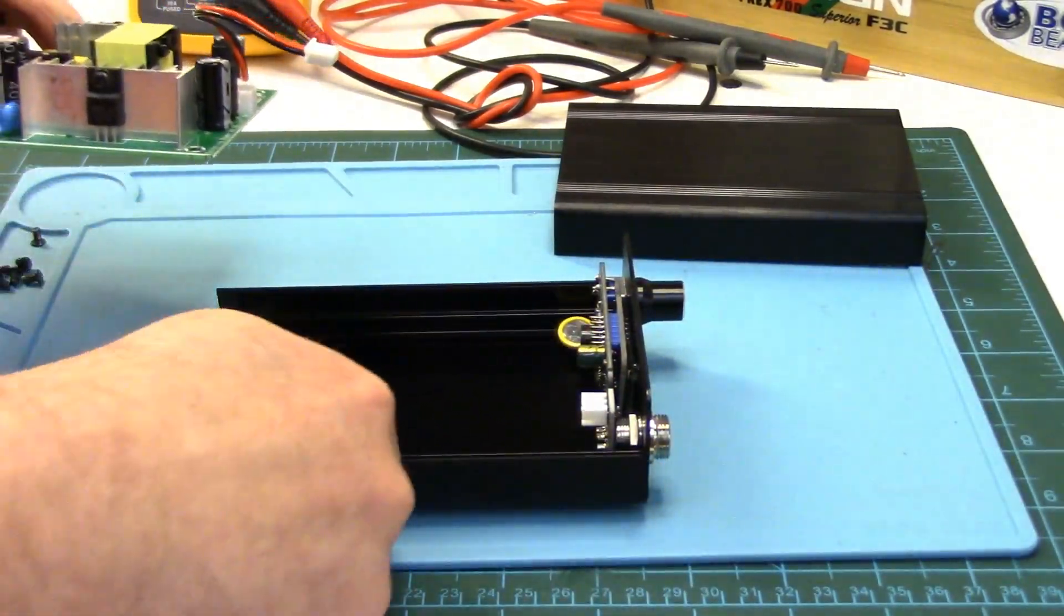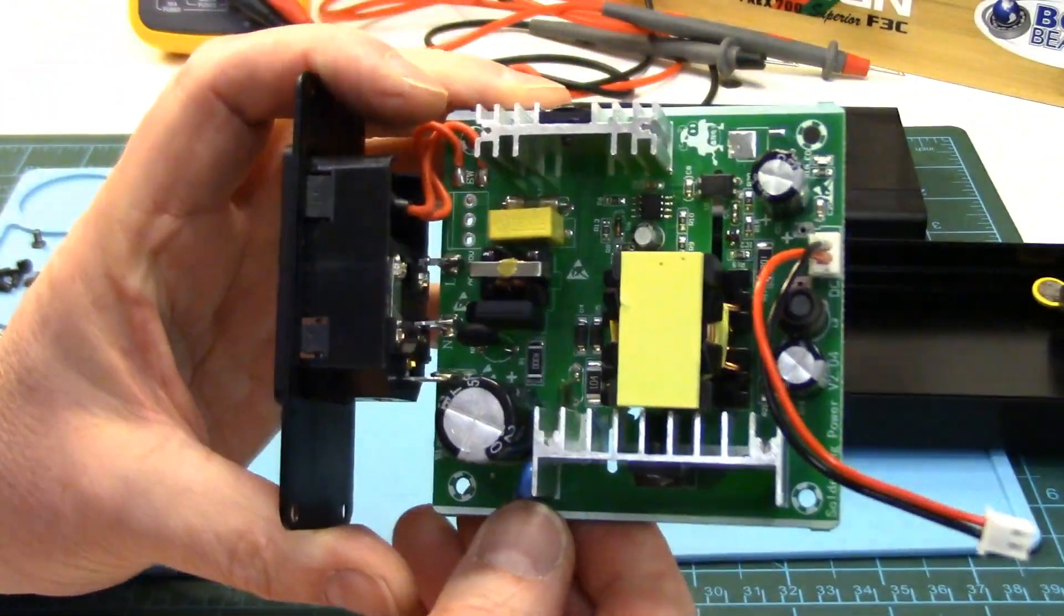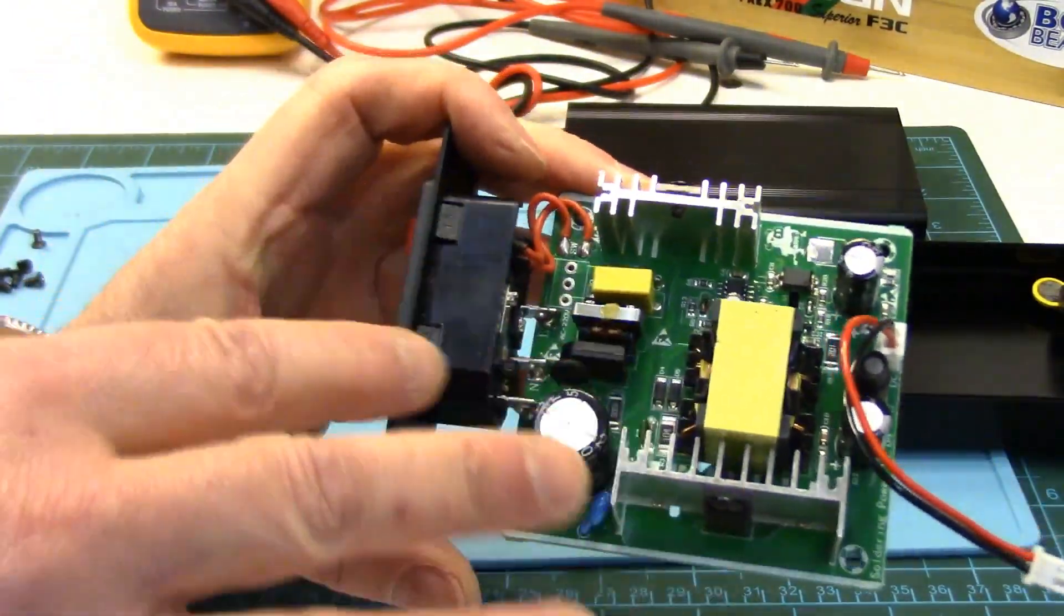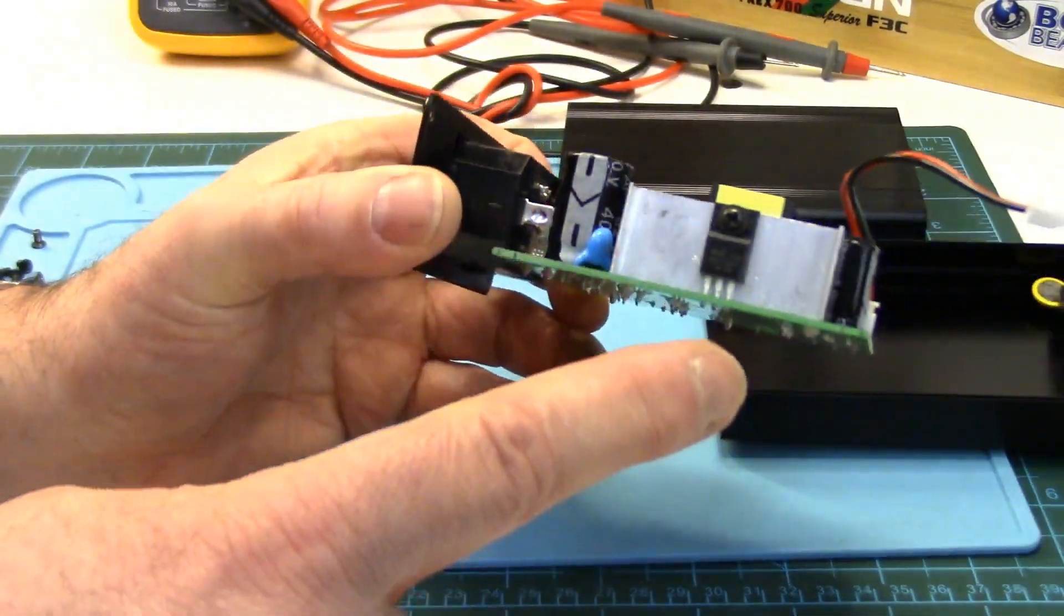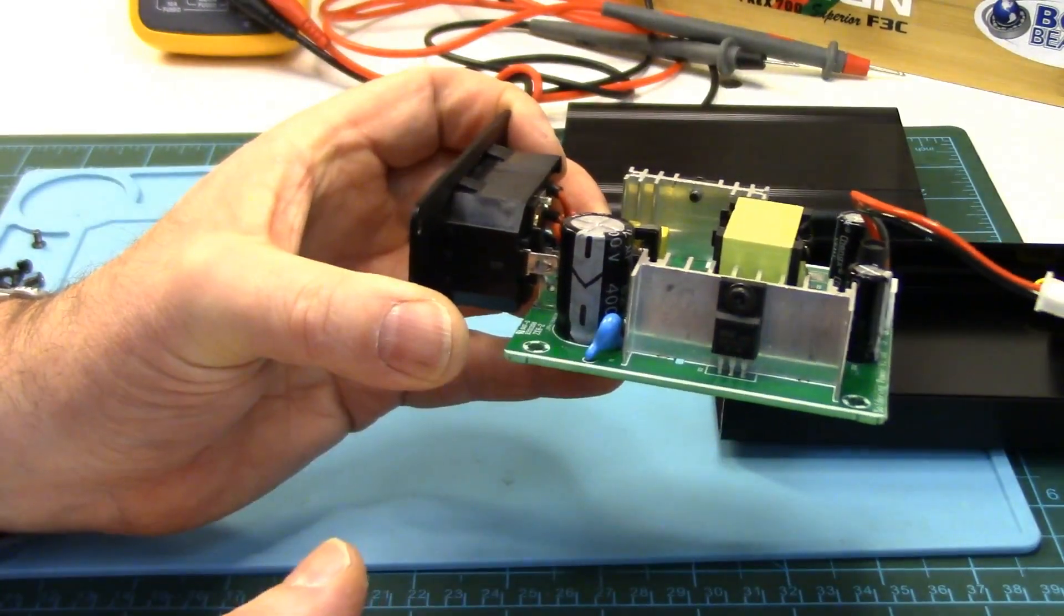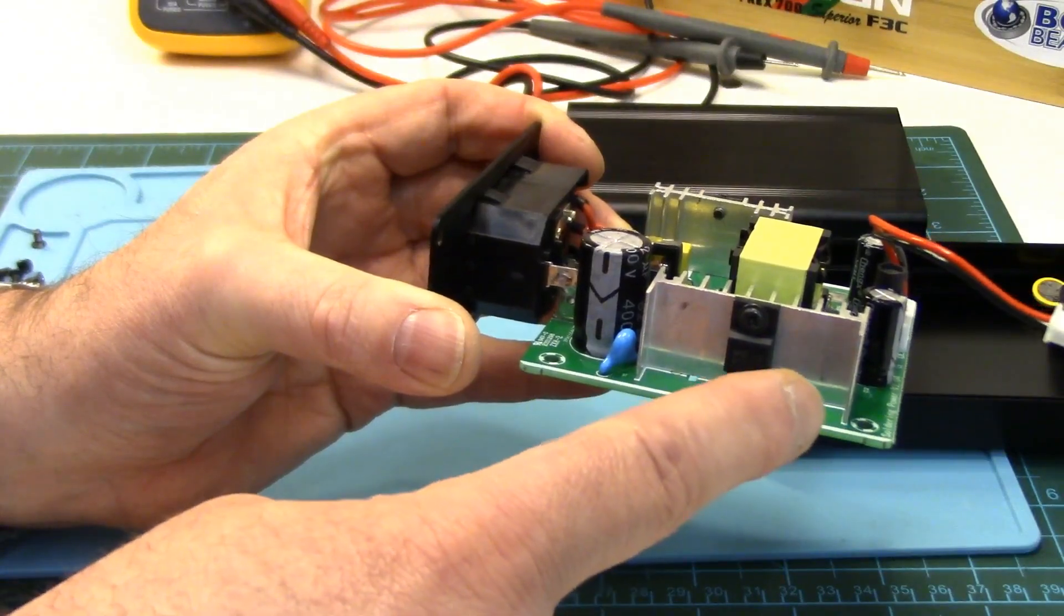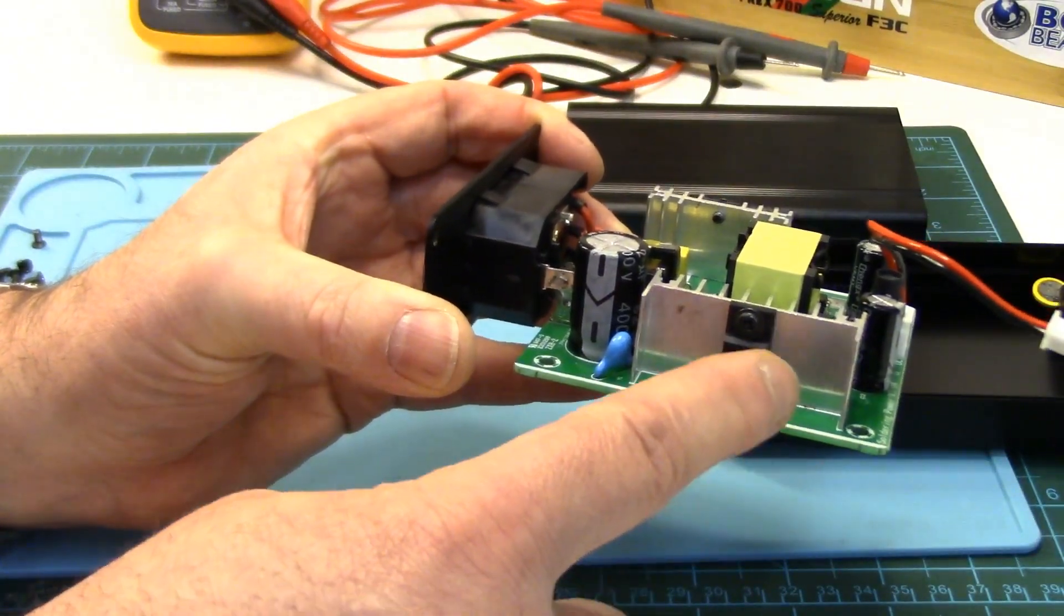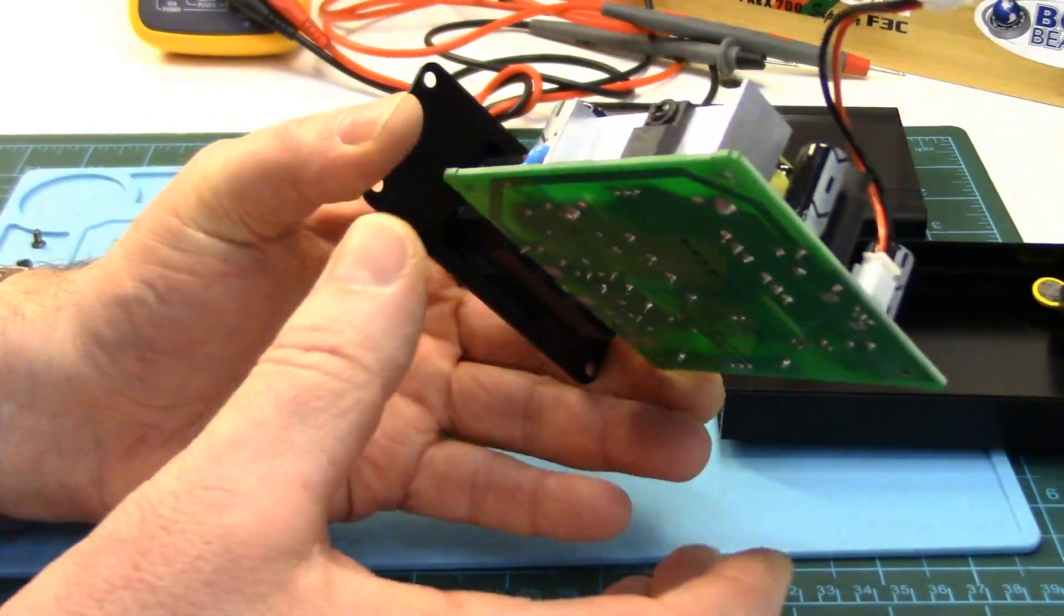So here is the switch mode power supply and all the mods are to it. One is case grounding and the other is giving this rectifier heat sink a little bit more protection. Out of the two mods this is kind of the secondary one, so if you don't want to do it don't worry about it. This heat sink grounding the case though to me is the most important one.